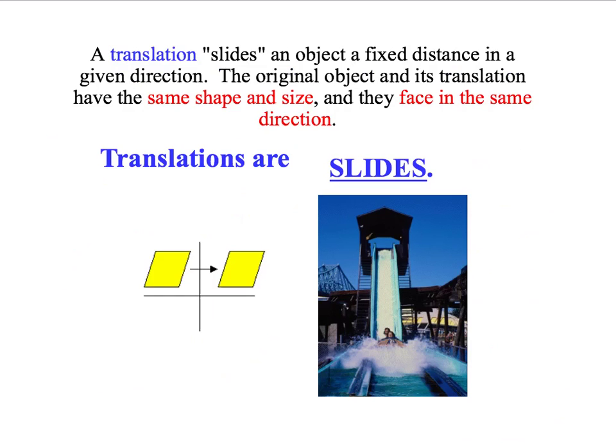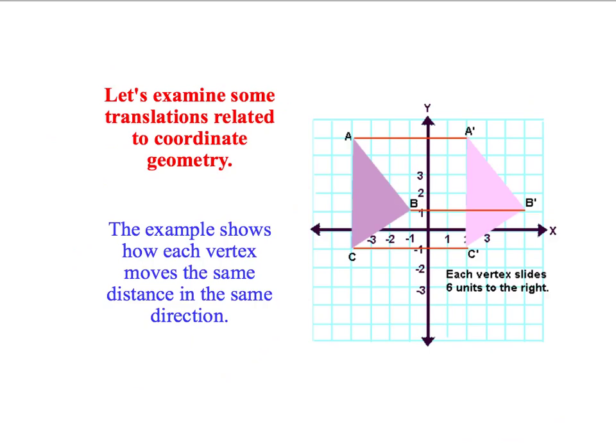A translation occurs when you move an object from one place to another place. We've got a few examples here. You can see that the original shape has moved over by six units to the right, so each vertex or each corner of the shape has moved six units right. That's the exact same shape just moved over.